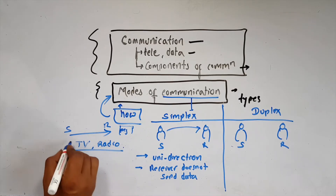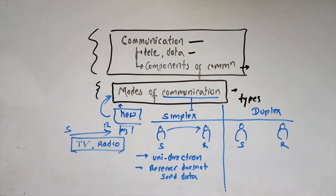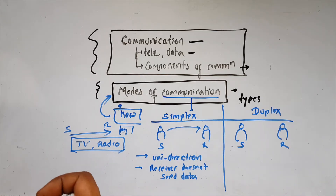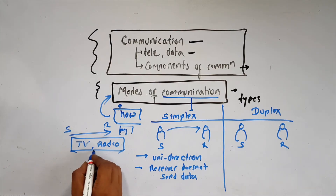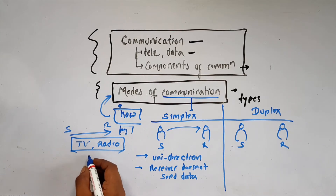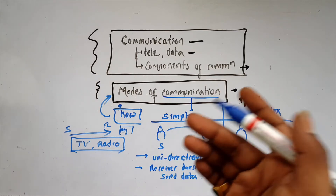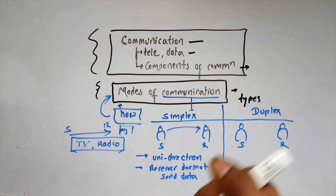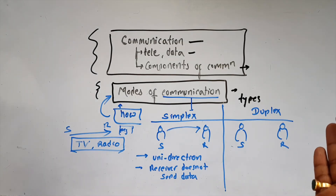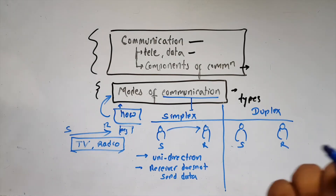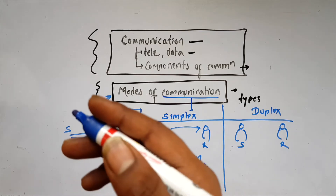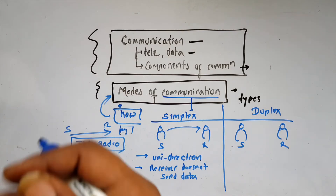If you imagine the TV, you can watch it and receive information, but you cannot provide feedback. The information flows one way only. TV and radio transmit unidirectionally — you listen or watch, but you cannot send anything back.